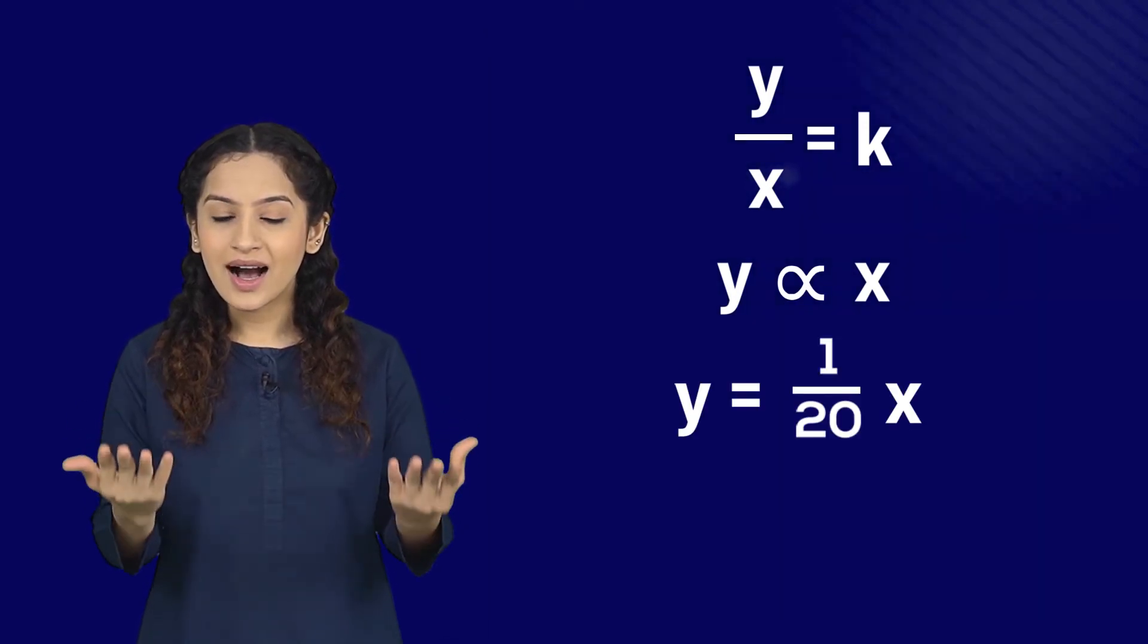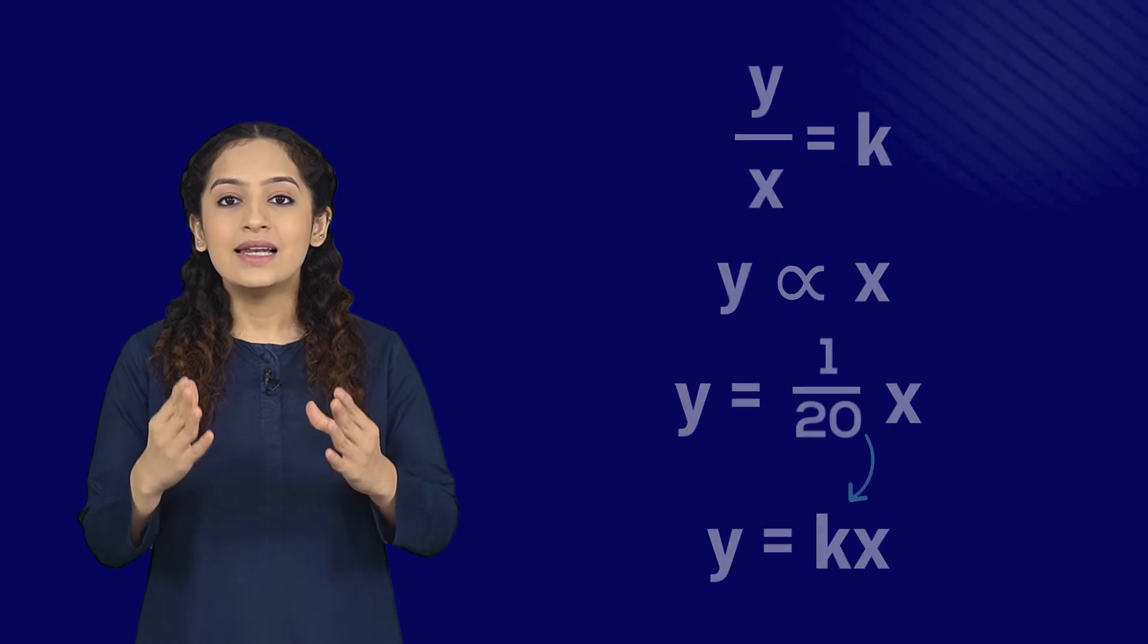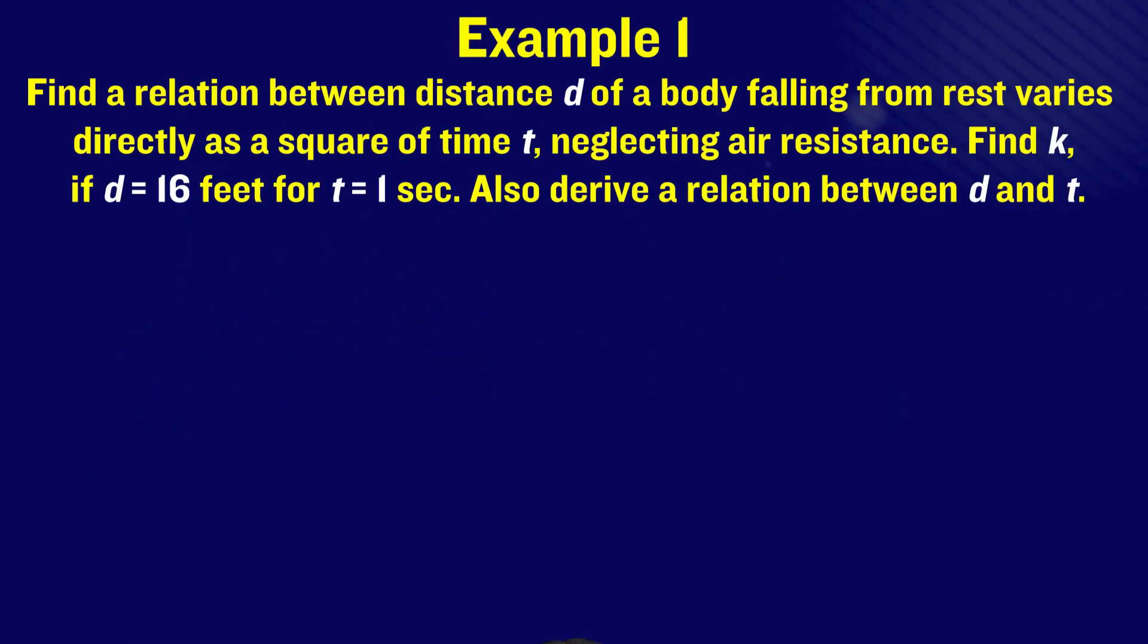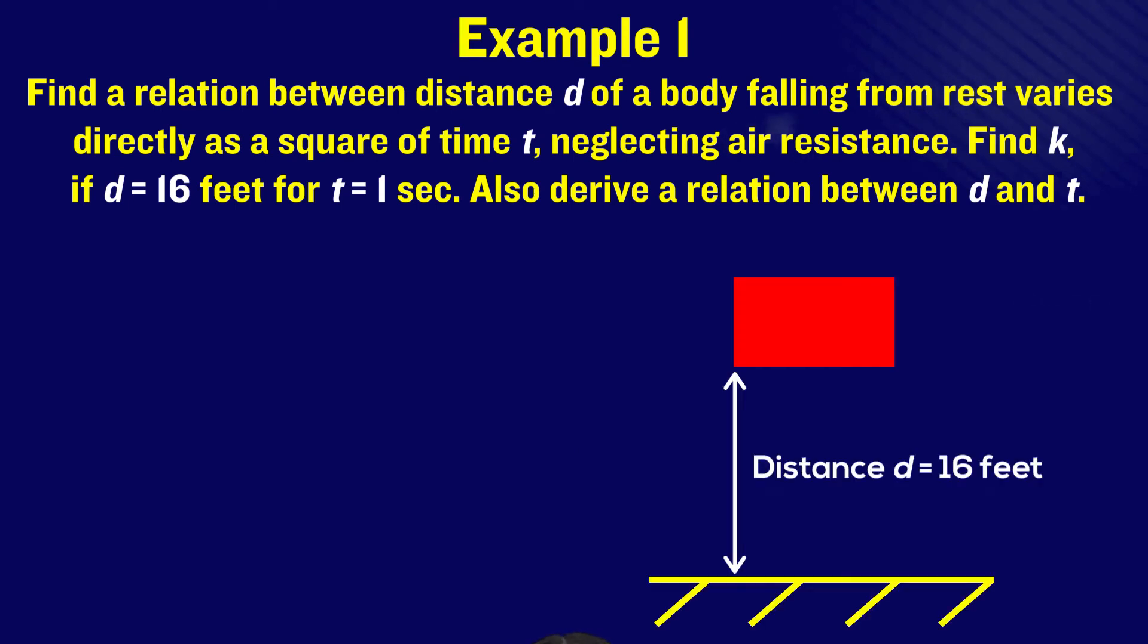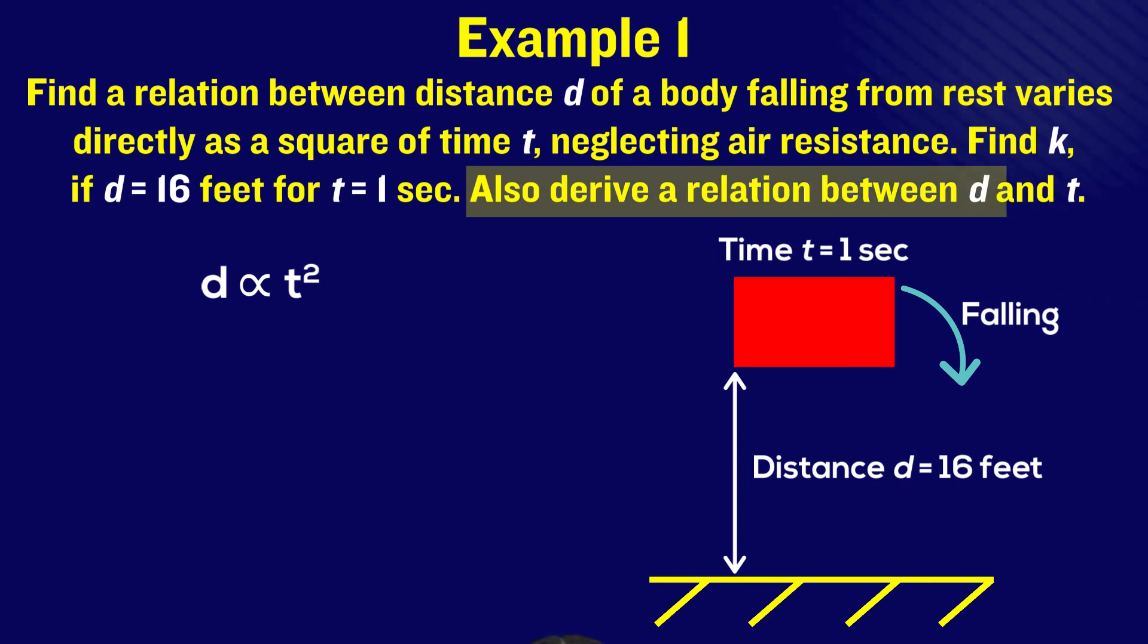Let's see an example related to direct variation. A practical situation is given: a body is placed at a distance d of 16 feet, falling in time t which is one second, such that the distance is directly proportional to the square of time. With all this information given, we are required to find this constant k and also the relation between d and t.